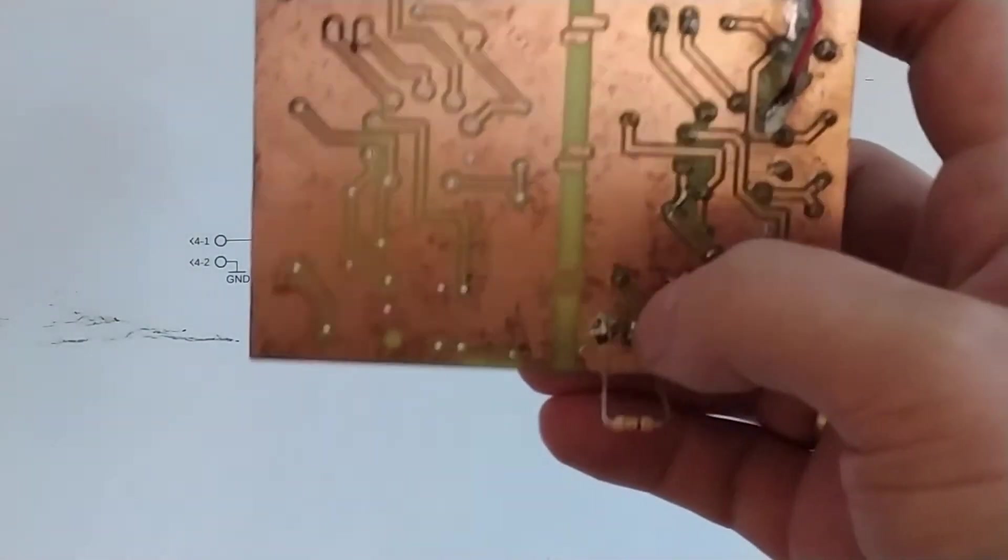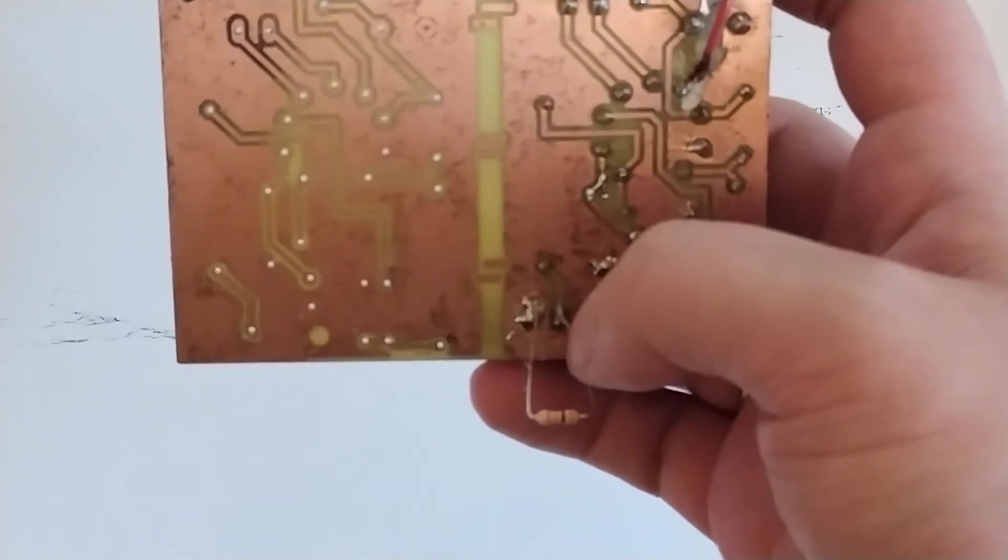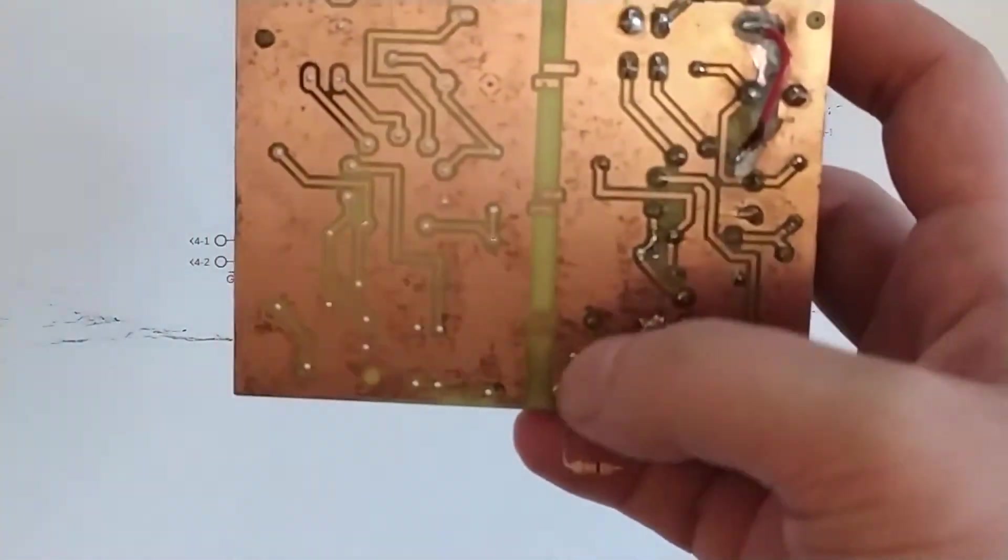Because else this will start oscillating like crazy, so you definitely have to have a resistor here or a volume control pot.